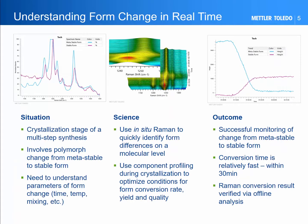This is one example of how to understand form change in real time by using ReactRaman. This example is the crystallization step of a multi-step synthesis for a new drug product. Through the use of in-situ ReactRaman, unique Raman bands can be assigned to each of the metastable and the stable forms of the product that were measured as a function of time. Here in the top left corner we see differences in the spectral characteristics between the metastable and the stable forms. In the middle feature, we see that these forms can be tracked over time, with a notable change evident. The image on the right is a trend over time of these changes in features. By using this, we were able to show that a conversion time occurred relatively quickly — within 30 minutes — which is a much shorter time period than was originally expected.